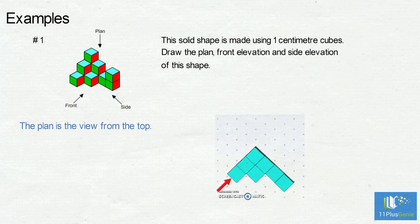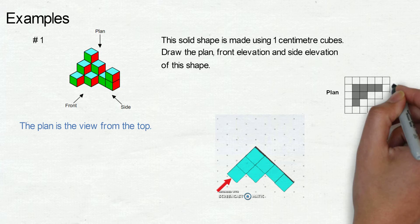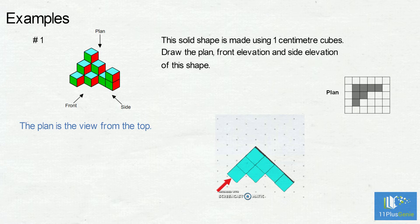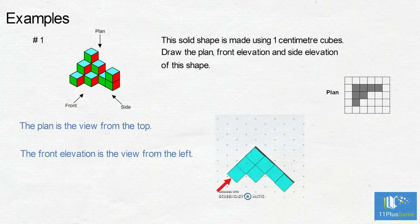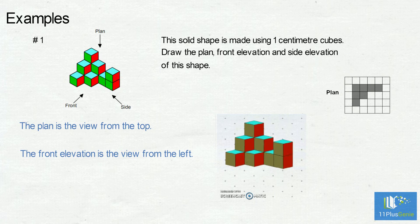In the first row there are three blocks, then two blocks, then one block, and next to it one block again. The plan looks like this. The front elevation is the view from the left — we will see the grey sides of the blocks. Let's look at an animation to see what the shape will look like.